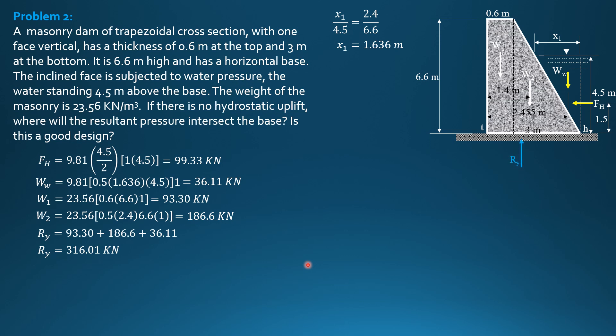Let's locate it. That's the position of Ry and its distance from the toe is X. To solve for X, we sum up moment about the toe. Ry times X plus FH times 1.5 equals weight 1 times 0.3 plus weight 2 times 1.4 plus weight of water 36.11 times 2.455. Solving for X, X is 0.7243 meters.